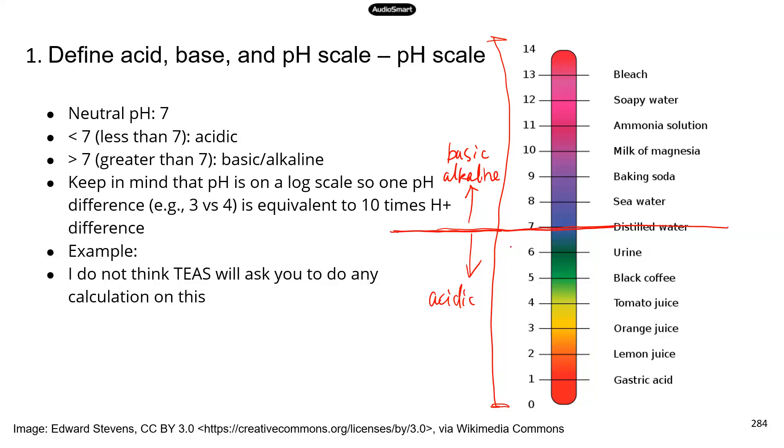If you move away from 7 to smaller numbers, that will be more acidic. And likewise for the basic range, the higher the number you get, the more basic the solution is. Now keep in mind that the pH is on a log scale. So everything, whenever you see one number difference, that's actually 10 times difference in hydrogen ion concentration. So for something that has a pH of 3 and pH of 4, first I'm going to ask you which one is more acidic. And the answer is the smaller number, because it's further away from the neutral number of 7. So pH of 3 is more acidic.